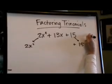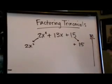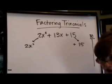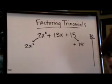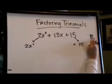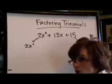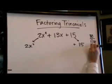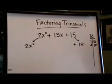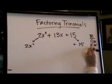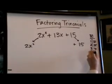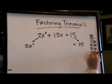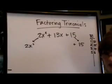I'm going to write 30 over here and list all of the factors of 30 in order: 1 times 30, 2 times 15, 3 times 10, and 5 times 6.